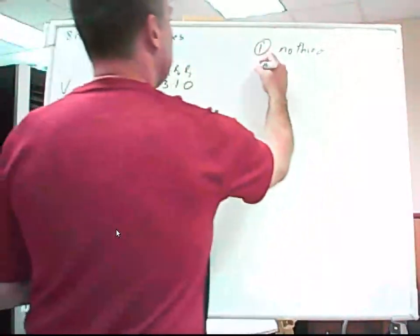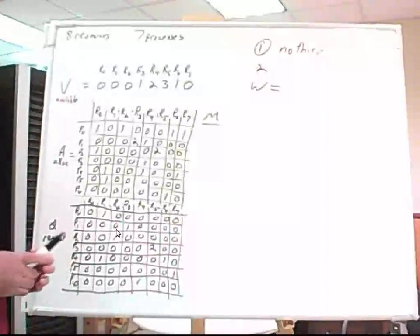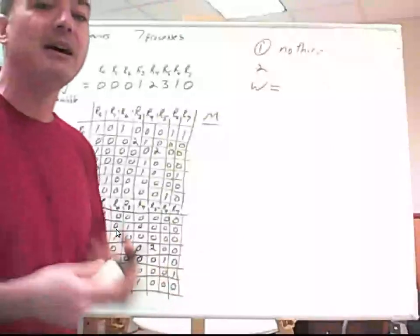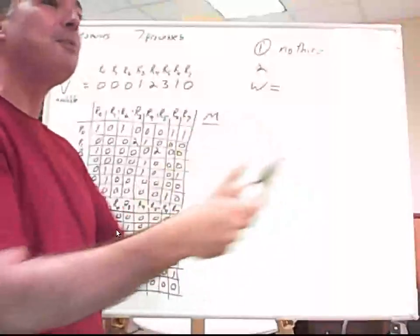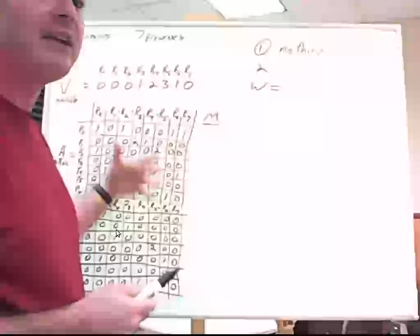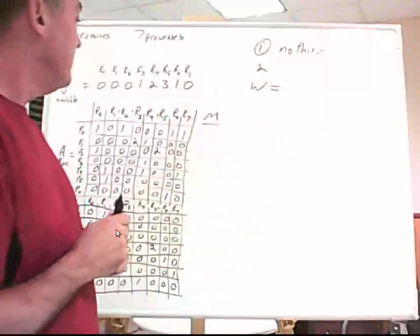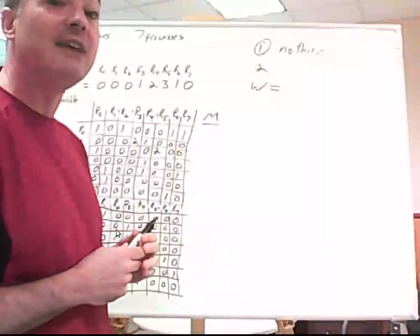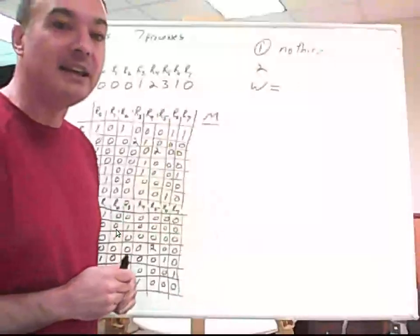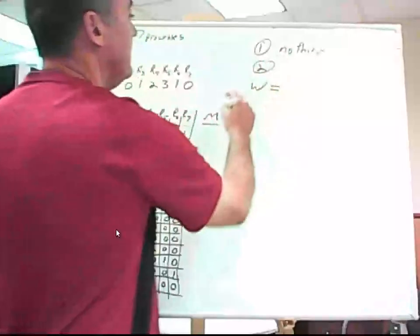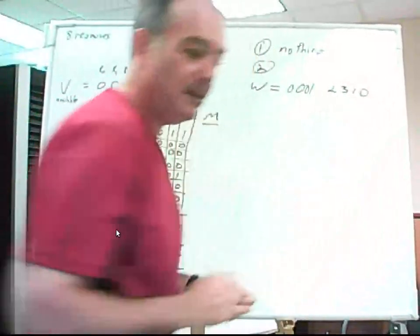Step two: initialize our W vector to be equal to the current available vector V. So W is: 0, 0, 1, 0, 0, 0, 1, 2, 3, 1, 0. We're going to use W to simulate finding processes whose outstanding requests can be satisfied, simulating those processes finishing, and returning their allocated resources back to the system.